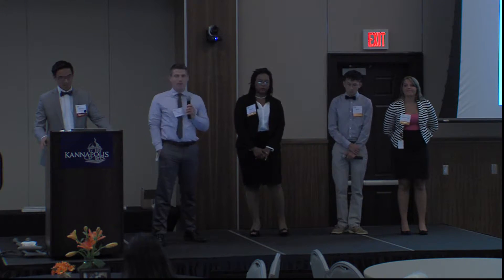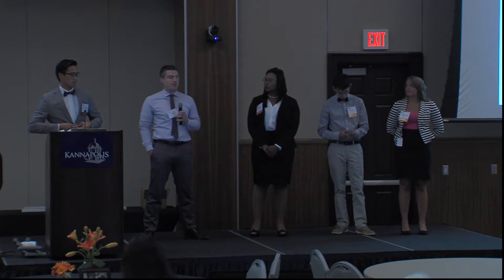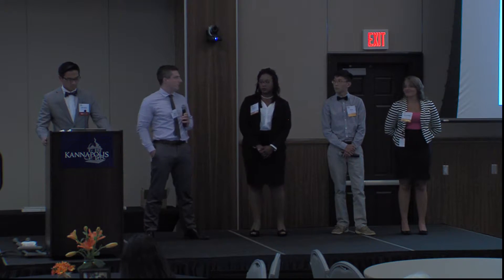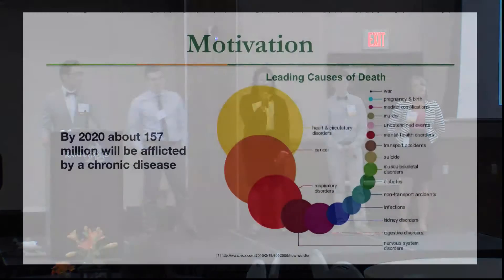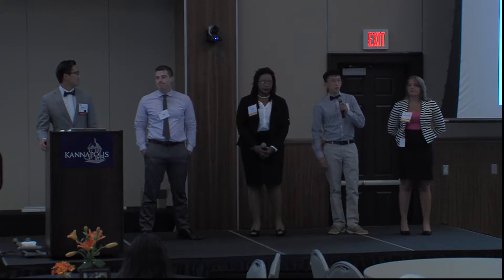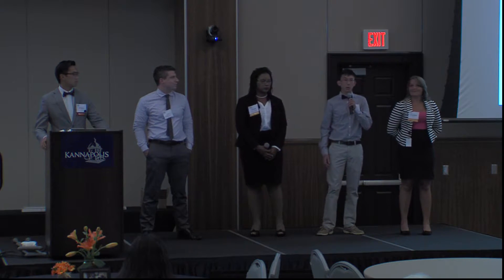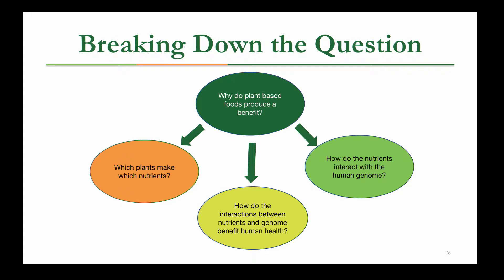Hi everyone. Today we're going to discuss our motivation, give some background information, discuss our methodology and progress this summer, and then conclude. Our motivation comes from the millions of people suffering from chronic diseases — heart disease and cancer are among the leading causes of death in the United States. In the next four years, approximately 157 million people will be afflicted by chronic diseases. Our goal is to find a connection between plant-based diets and human health. Take broccoli: what nutrients does it produce, how do those nutrients interact with our human genome, and how do those interactions ultimately benefit human health?